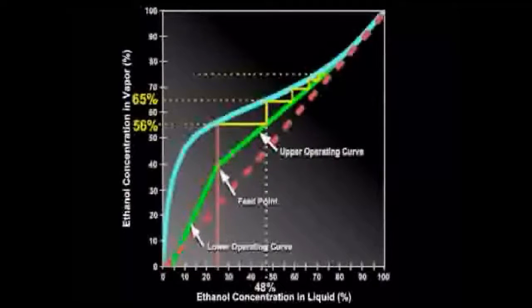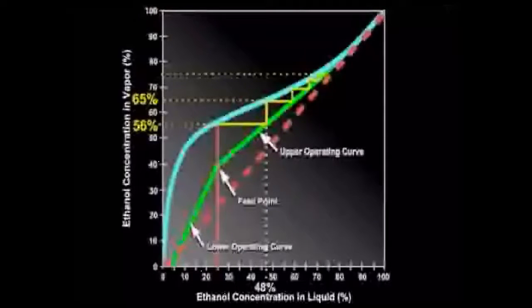If we require the ethanol concentration in the distillate to be 75%, five stages are required above the feed.